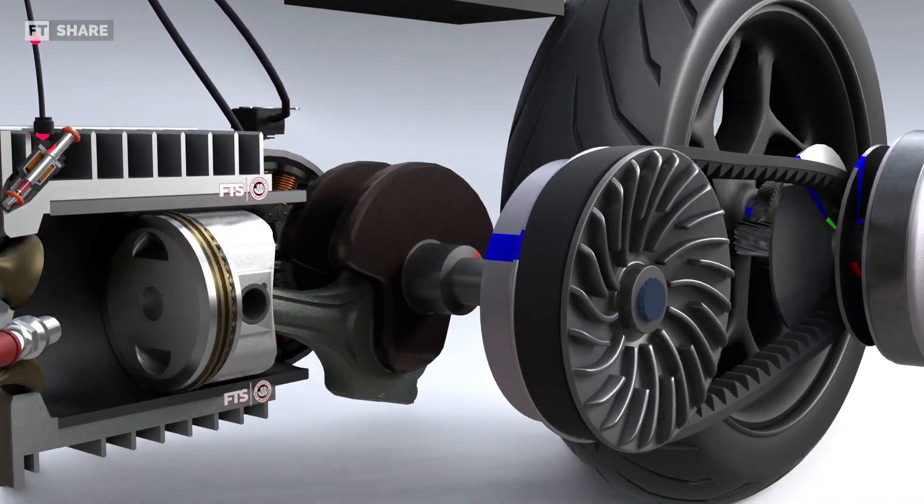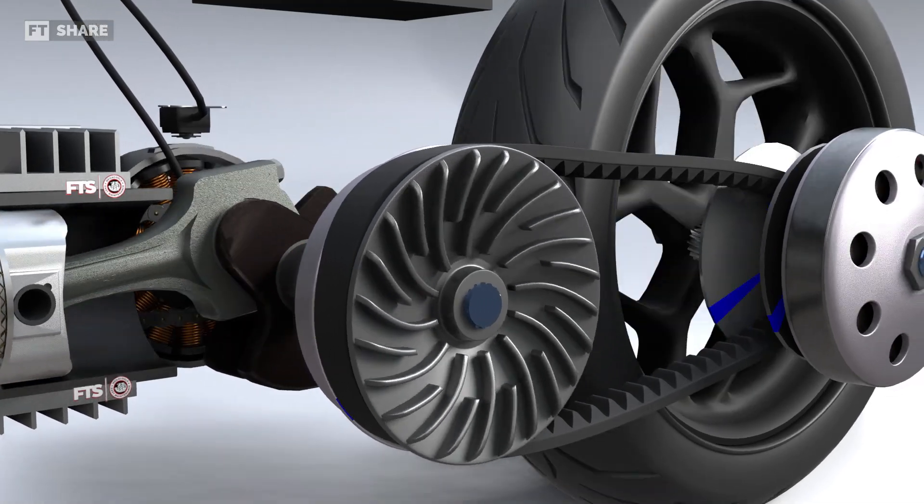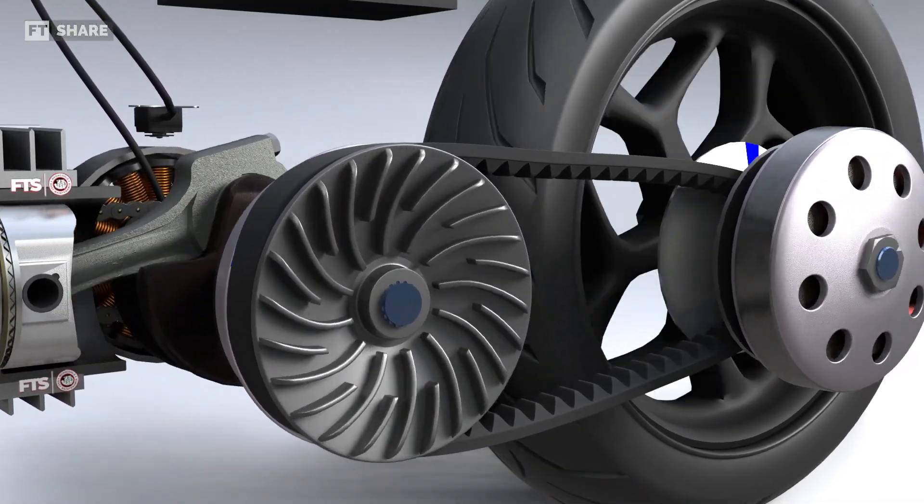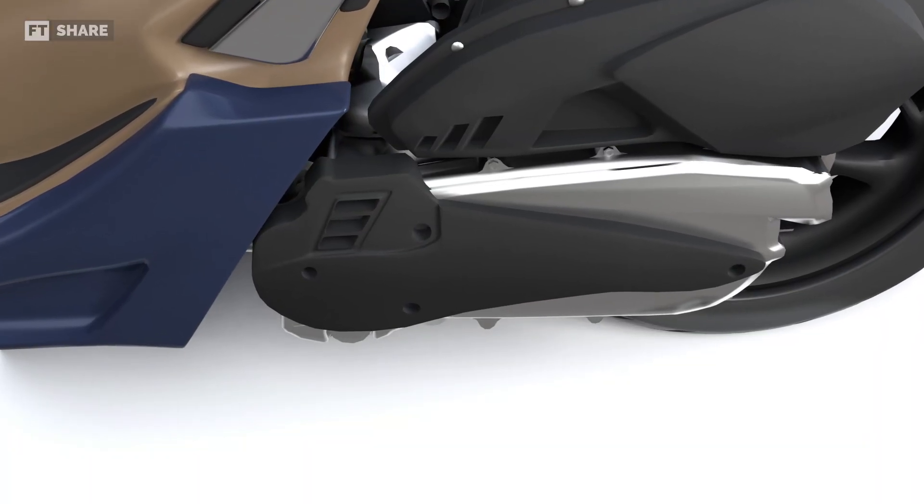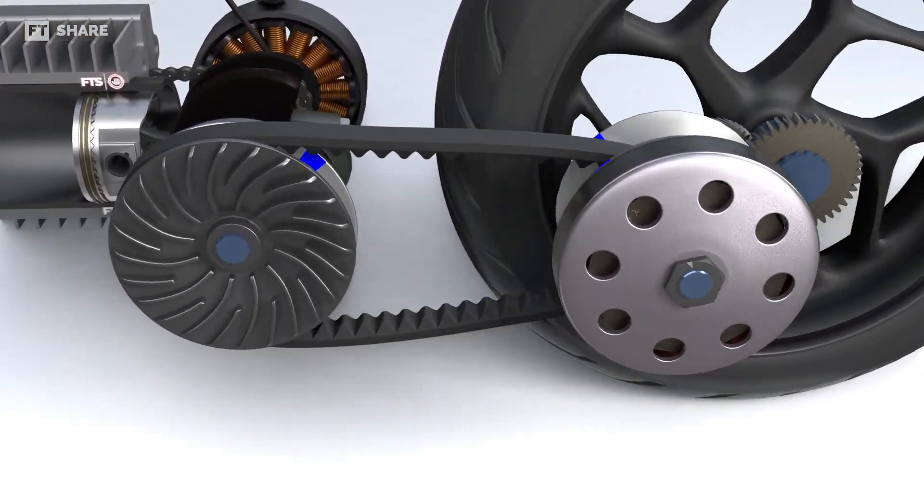CVT is a very common and popular transmission system worldwide due to its practicality, and as a result, we often see it used in scooters. Without further ado, let's take a closer look at how it works and all of its parts for a better understanding.